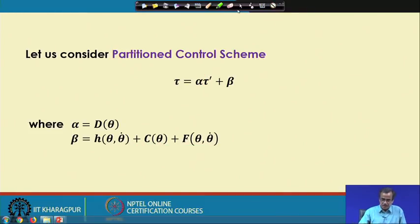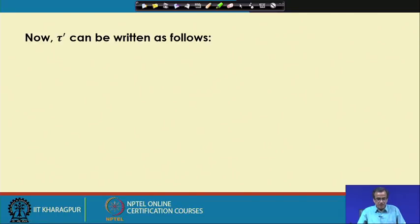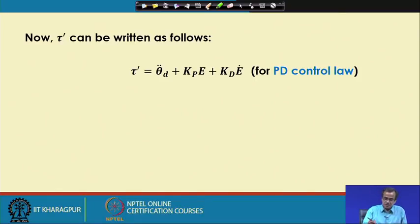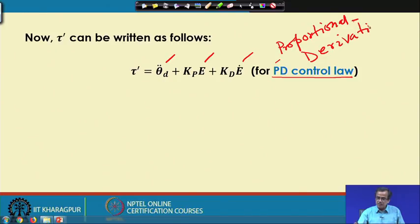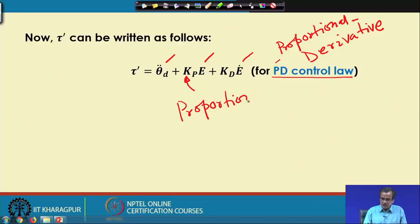To generate tau-prime, we use the PD control law — that is, proportional-derivative control law. According to this, tau-prime equals theta-d-double-dot plus Kp times E plus Kd times E-dot. Here Kp is the proportionality gain value and Kd is the derivative gain value.